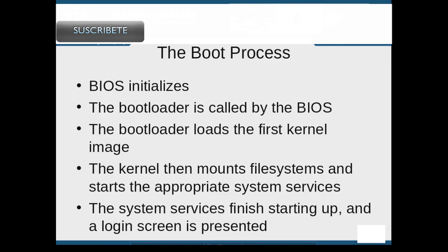The first stage in the RHEL boot process is the system's BIOS initialization. Next, the BIOS calls up the bootloader for the system. After the bootloader is brought up, the first kernel image is then loaded into memory. Next, the kernel mounts the necessary file systems and starts activating the appropriate system services. And in a final stage of the system startup, the user is presented with a login screen.